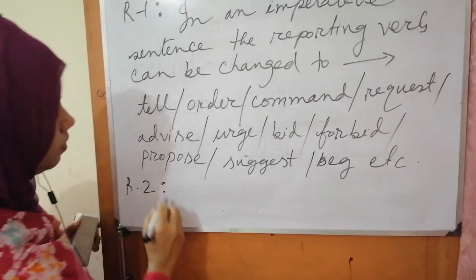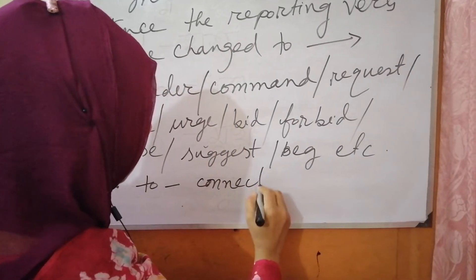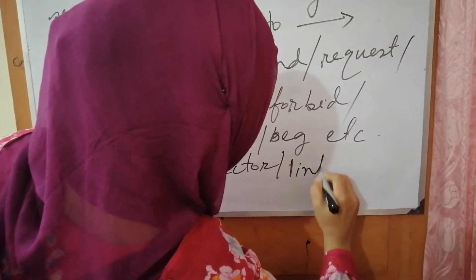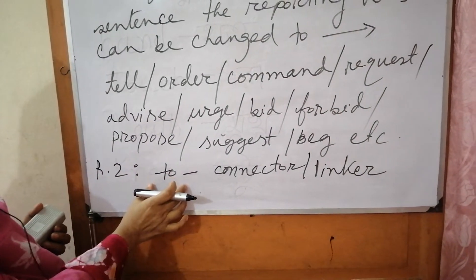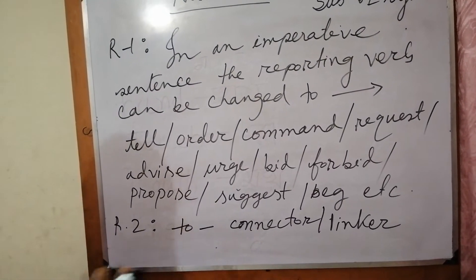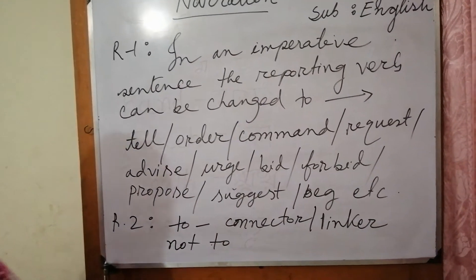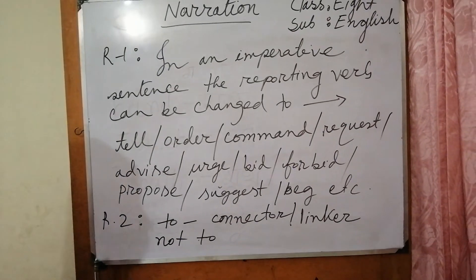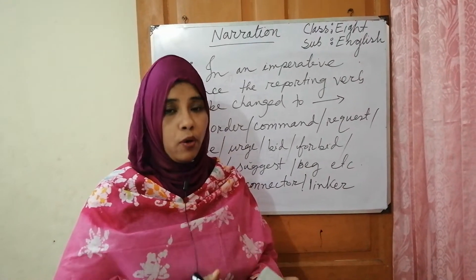Rule number two: we will use 'to' as a connector or linker. If the imperative sentence is positive, then we will use 'to' as a connector. But if the imperative sentence is negative, then we will use 'not to' as a connector. The other changes — changes of verb and changes of persons — will remain as a set rule we follow.